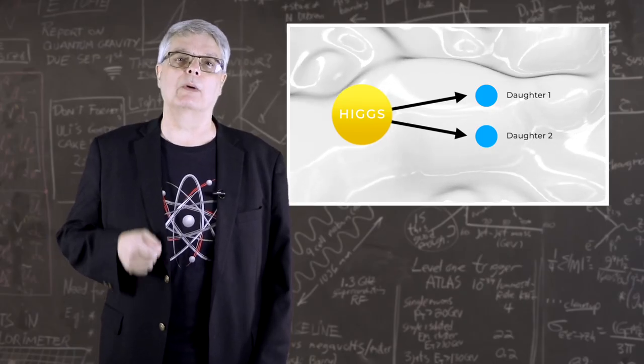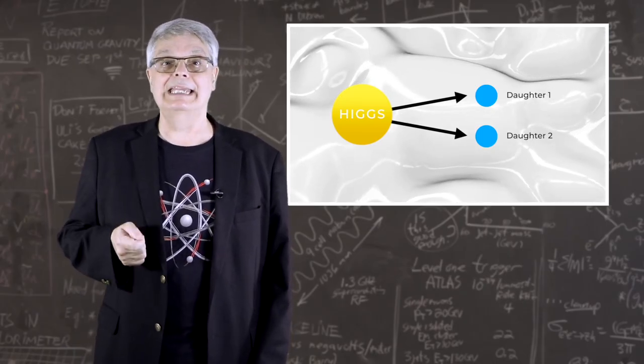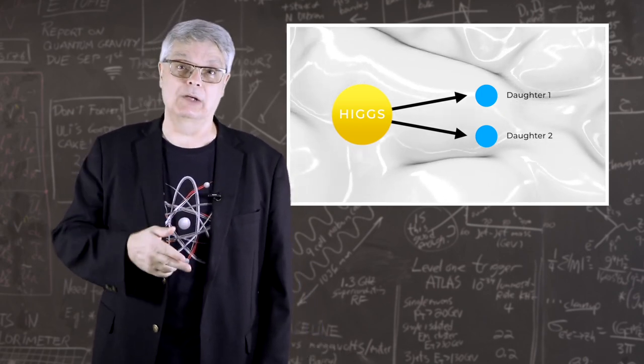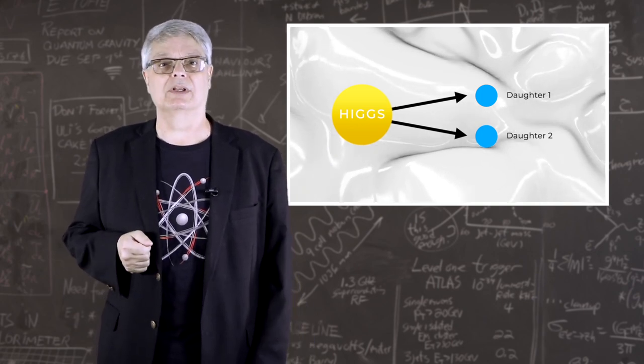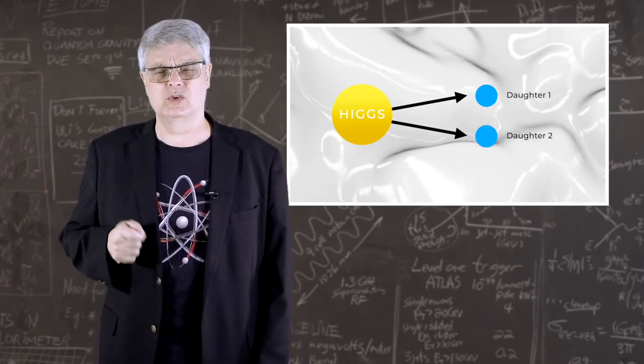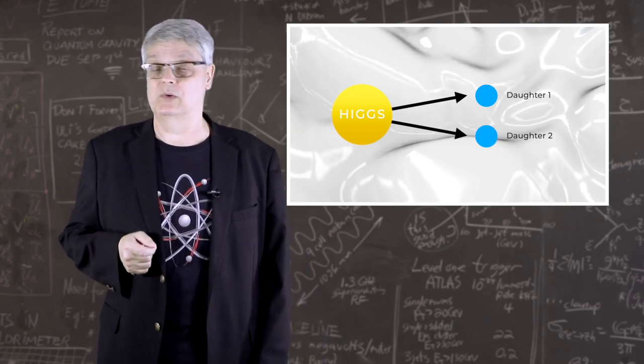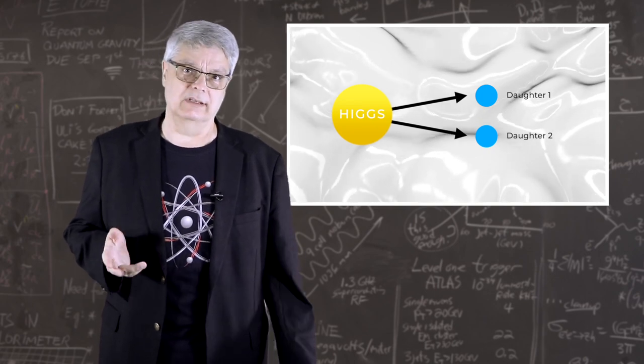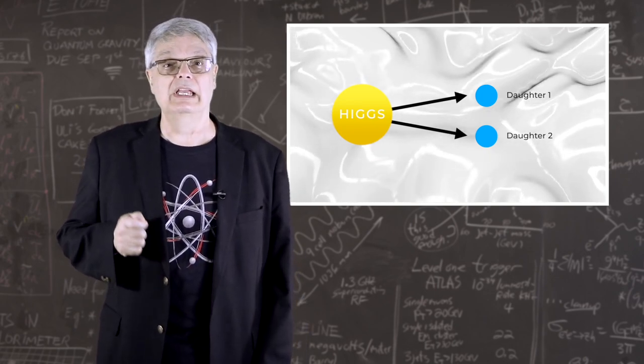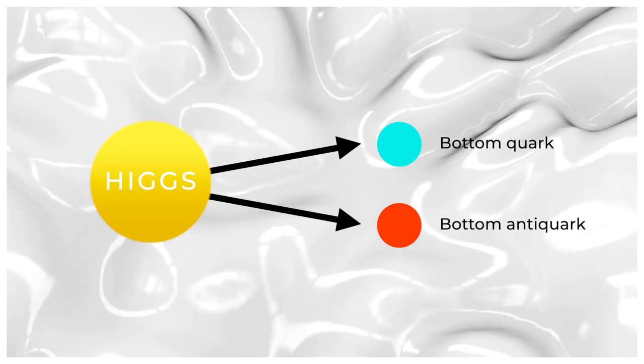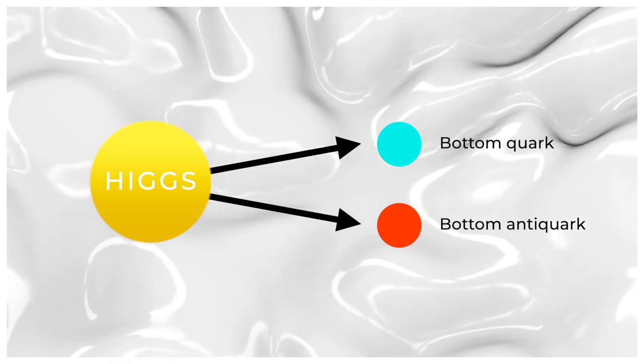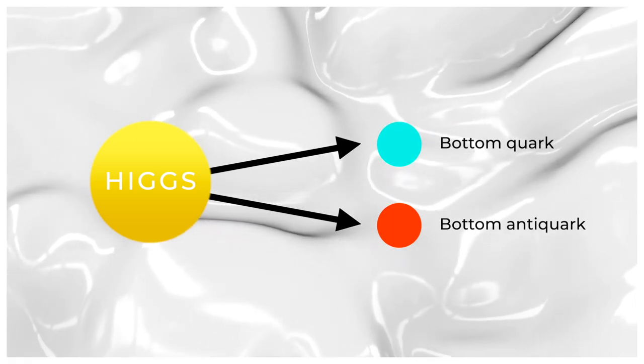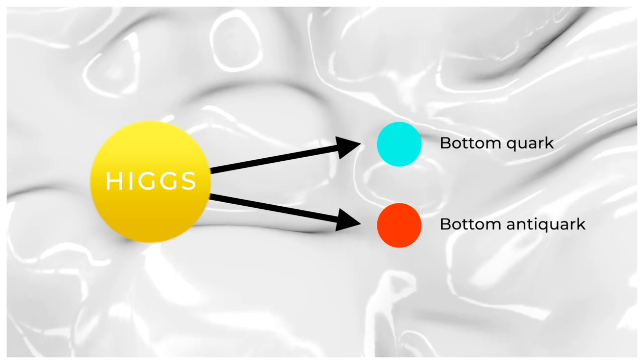The Higgs boson decays into a pair of particles. One Higgs into two daughters. It turns out that pairs of top quarks and W and Z bosons are heavier than the Higgs boson, so you'd think that decays into those particles would be forbidden, although there's a bit more to that story. The heaviest particle into which the Higgs boson can decay, according to classical energy conservation, is the bottom quark. So that would be the sensible place to look for Higgs bosons, which is to say events in which a bottom quark and antiquark are created.